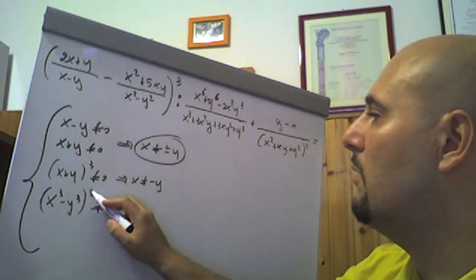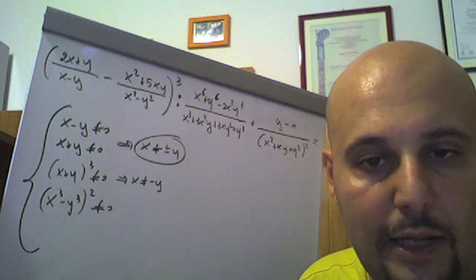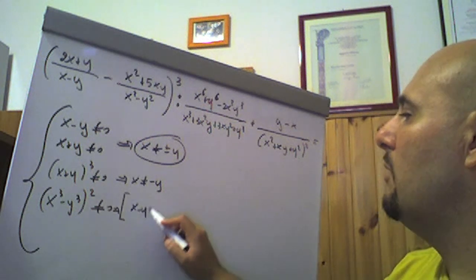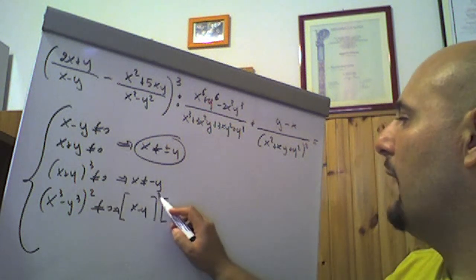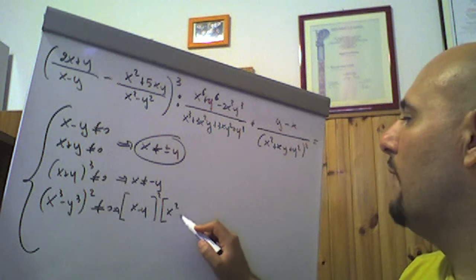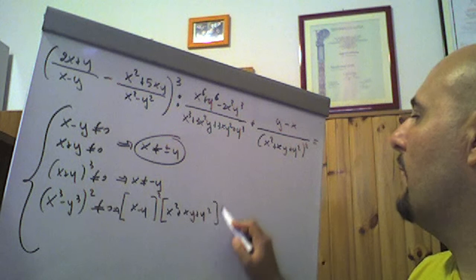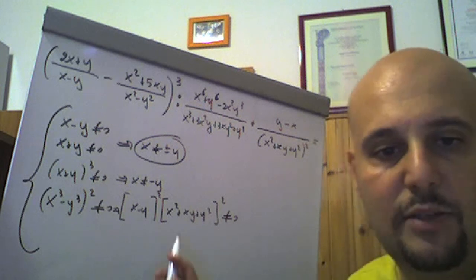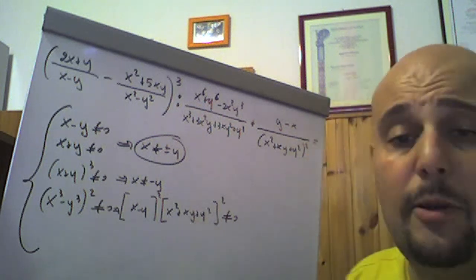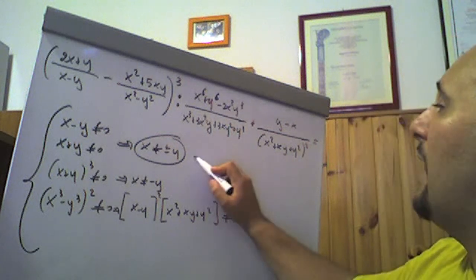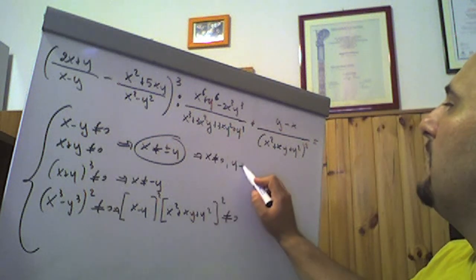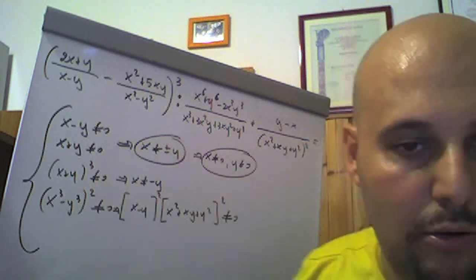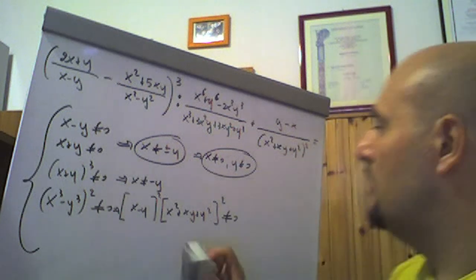Ricordo che a sua volta il binomio di terzo grado che c'è dentro la parentesi tonda è una differenza di cubi. Quindi possiamo scrivere come (x meno y) per il falso quadrato, al quadrato naturalmente, che guarda caso è (x quadro più xy più y quadro) al quadrato. Questo prodotto è diverso da 0 quando questo è diverso da 0. (X meno y) è diverso da 0 quando x è diverso da y; (x quadro più xy più y quadro) al quadrato è diverso da 0 quando x è diverso da meno y. Aggiungerei anche x diverso da 0 e y diverso da 0. Sono queste quattro condizioni di esistenza.